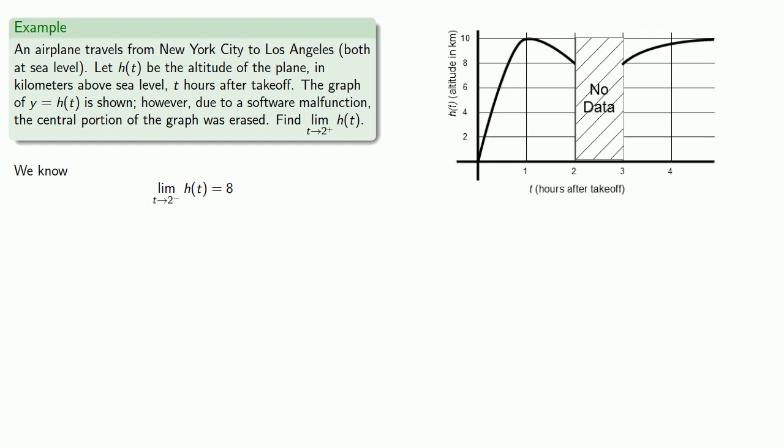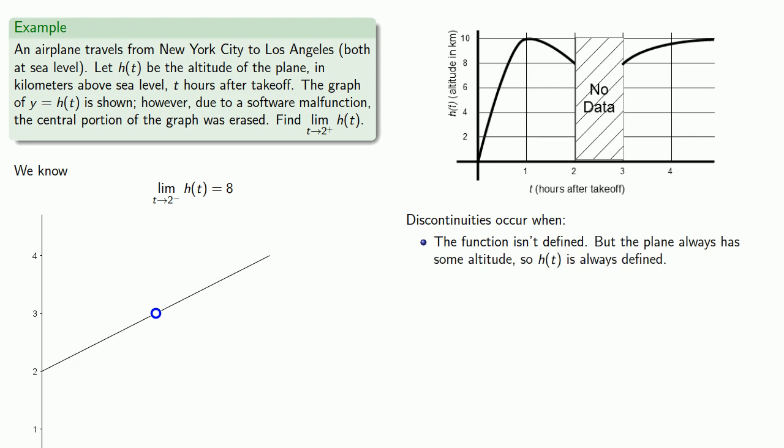So if we'd like our function to be continuous, we might ask ourselves, what would make it be discontinuous? As we saw, there are two situations where a discontinuity occurs. A discontinuity occurs when the function isn't defined, but the plane always has some altitude, so H of T is always defined, so this case can't apply.